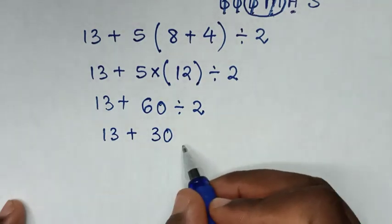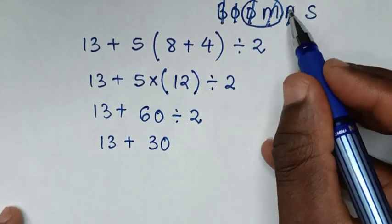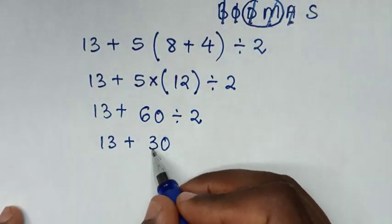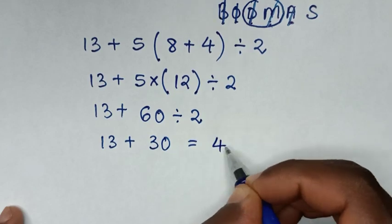Then in here, we are left with this addition. So from 13 plus 30, is equal to 43.